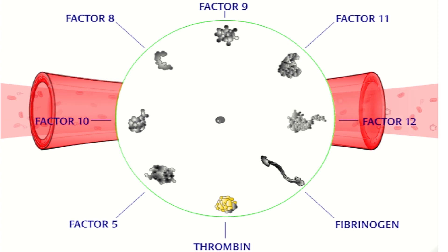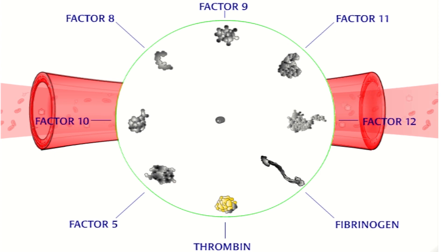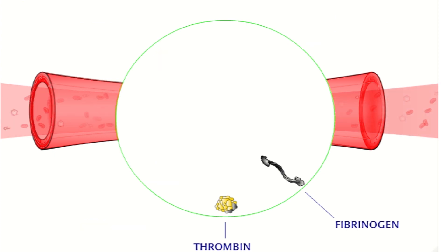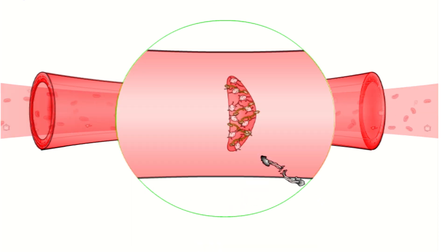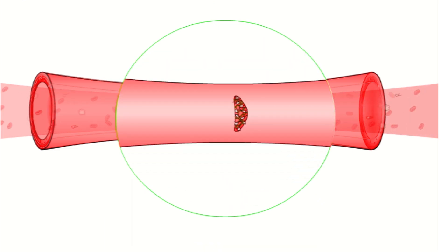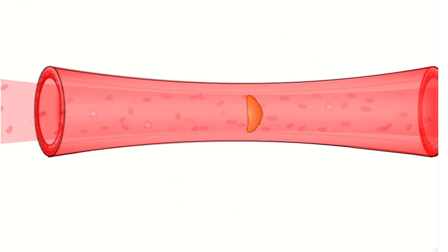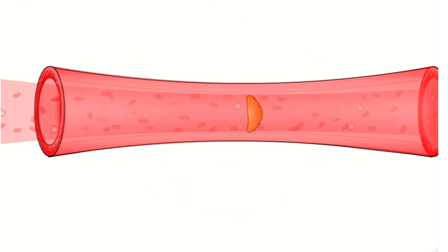This initiates a cascade of reactions that ends when the last molecule, thrombin, is activated. Activated thrombin then snips small pieces off another protein called fibrinogen. When lots of fibrinogen is cut, the pruned molecules cover the platelets and stabilize the clot. To form a stable clot, all the molecules in the cascade must be present and properly shaped.